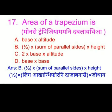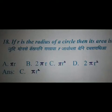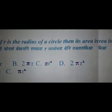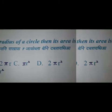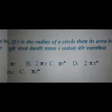If R is the radius of a circle, then its area — we have four options and the right answer is option C: pi r square.